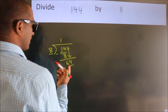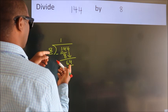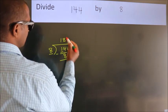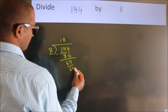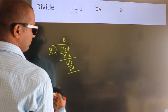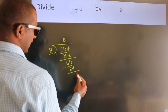When do we get 64? In the 8 table, 8 times 8 is 64. Now we subtract. We get 0.